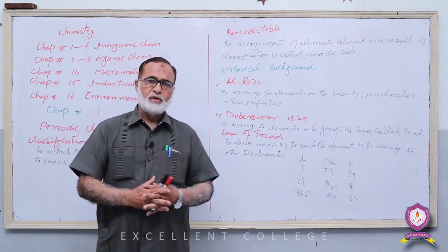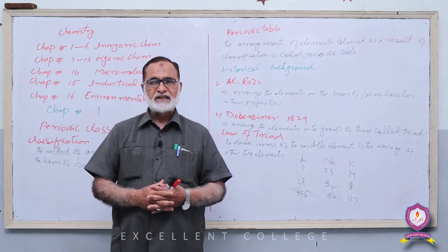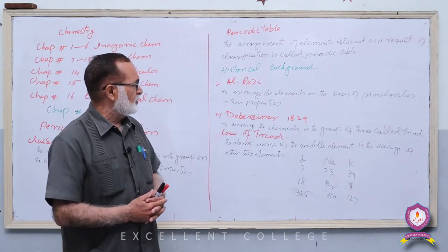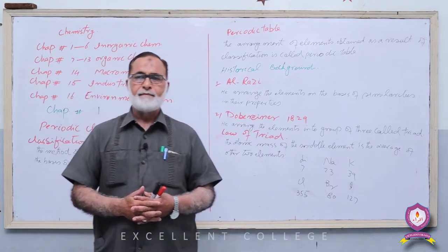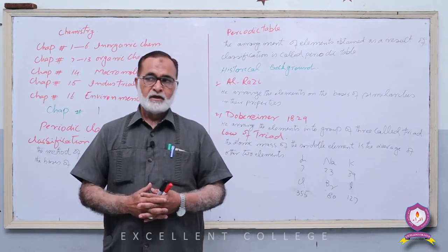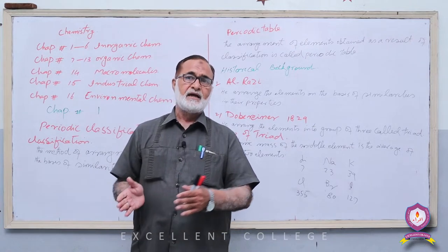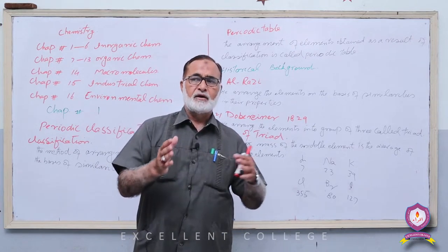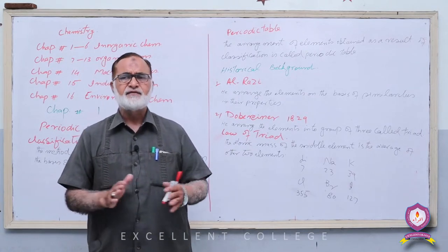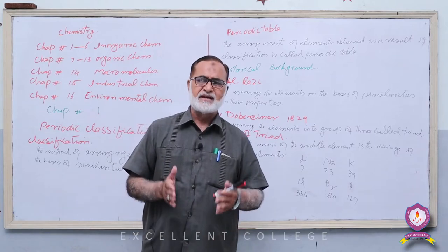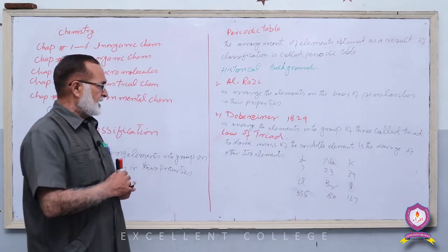Al-Razi نے elements کو ان کی properties کی بنیاد پر ترتیب دینے کی کوشش کی۔ اس نے elements کو majorly دو groups میں divide کیا: Metals اور Non-Metals۔ Metallic properties رکھنے والوں کو Metals کے group میں اور Non-Metals کو Non-Metals کے group میں رکھا۔ But there was a lot of confusion in this classification, and that was not a comprehensive classification۔